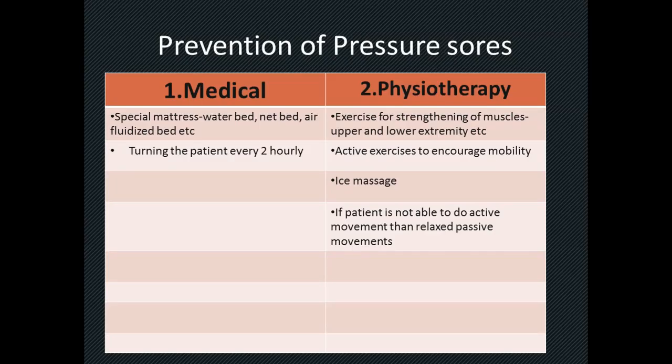Let's start with the first flowchart — that is for the pressure sore, popularly known as the decubitus ulcer. Any patient who is operated on for orthopedic surgery, neurosurgery, cardiac surgery, pulmonary surgery, or any abdominal surgery is prone to develop a pressure sore after surgery. Knowing this, we can start with preventive treatment, which can be divided into medical and physiotherapy.